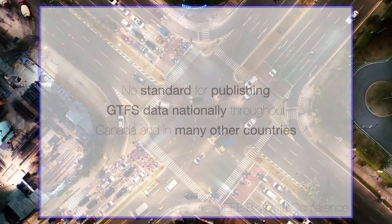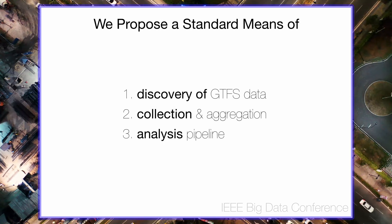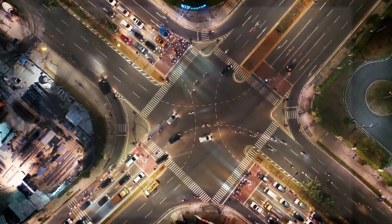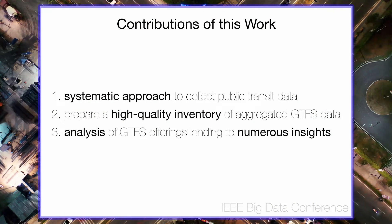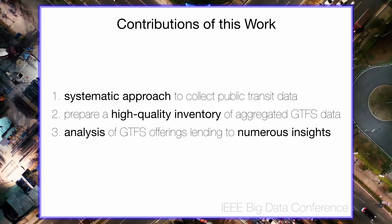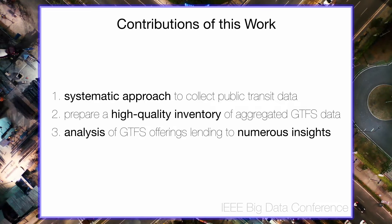To the best of our knowledge, there does not exist a standard data description of detailed fixed route ridership throughout Canada, and this is a finding also seen in other countries such as the United States and throughout Europe. This research proposes a systematic GTFS data discovery, collection, and analysis pipeline to study public transit offerings within Canada. Consequently, in this work we make three contributions: one, a systematic approach to collect public transit data from various sources; two, a high-quality inventory of aggregated GTFS data made publicly available; and three, an analysis of public transit offerings lending to numerous insights between regions and cities.